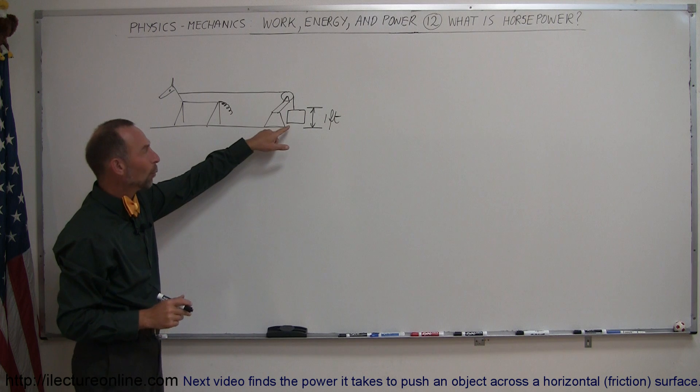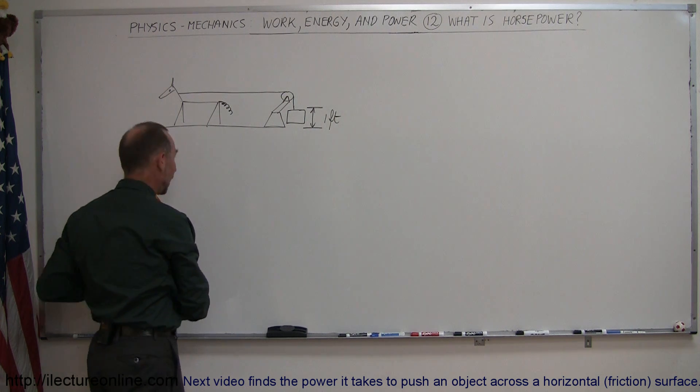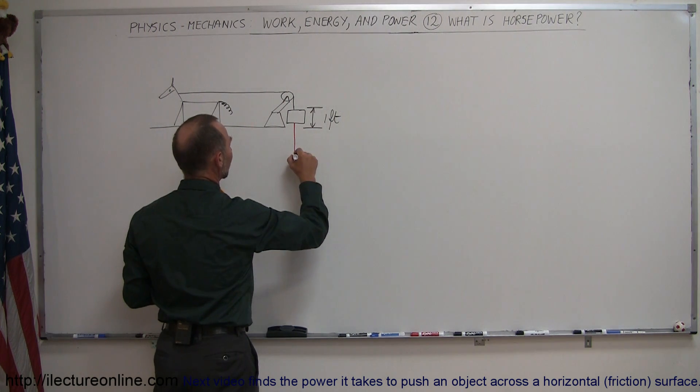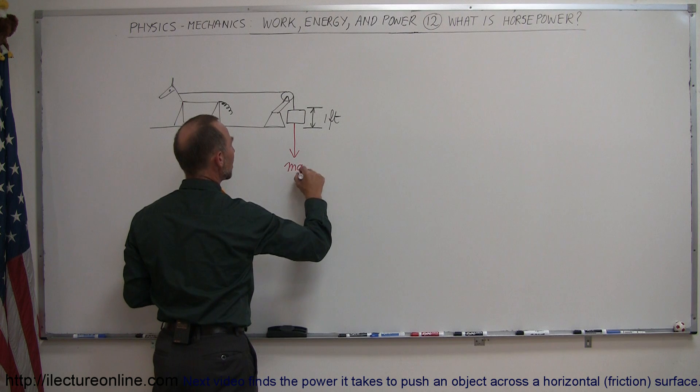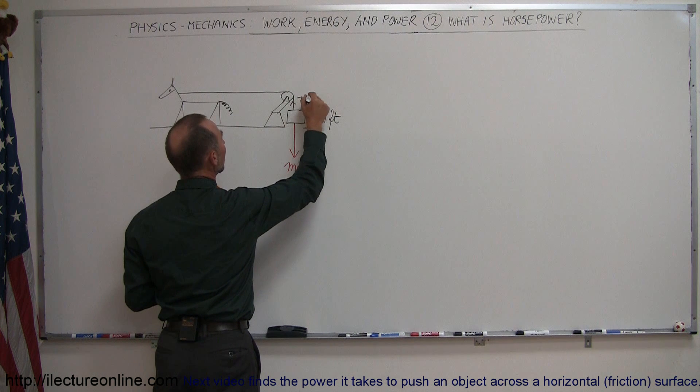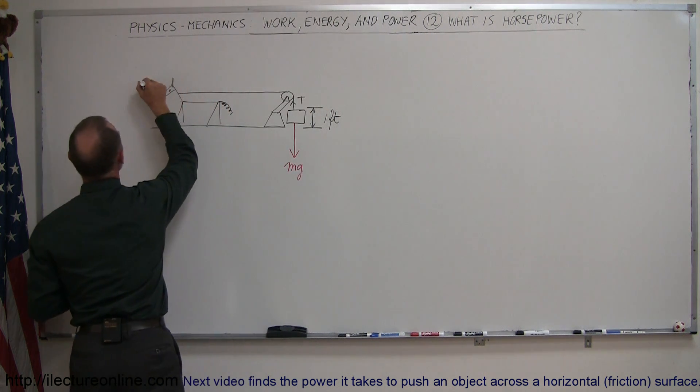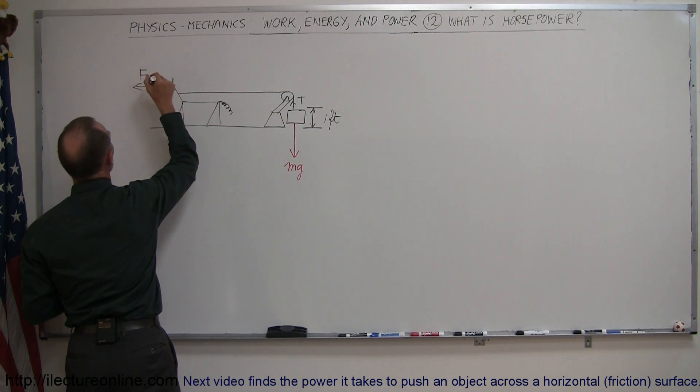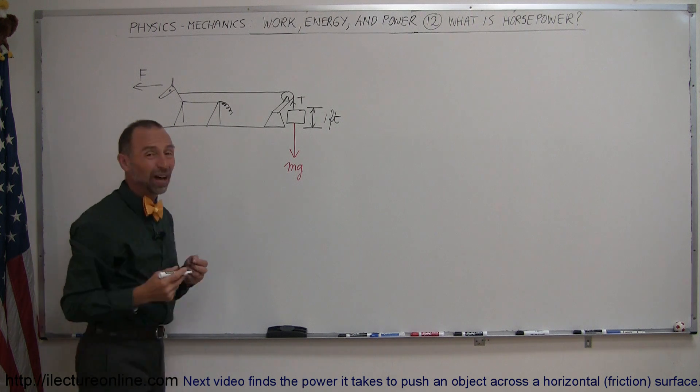And so what they did was they varied the weights of this object in such a way, and of course knowing that because of gravity we have mg, the weight of the object coming down, and that's being pulled up by the tension in the string which is equal to the force that the horse pulls on that string.